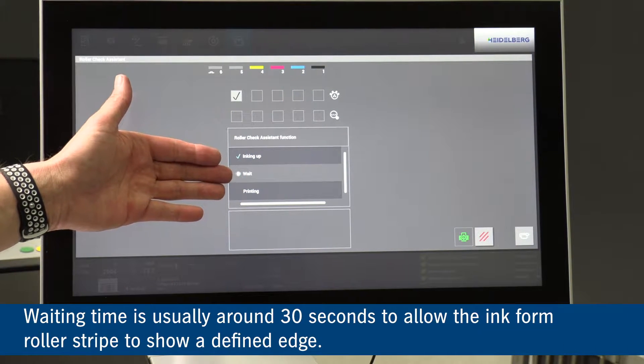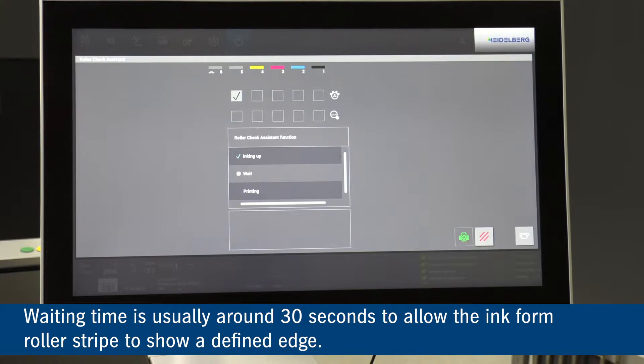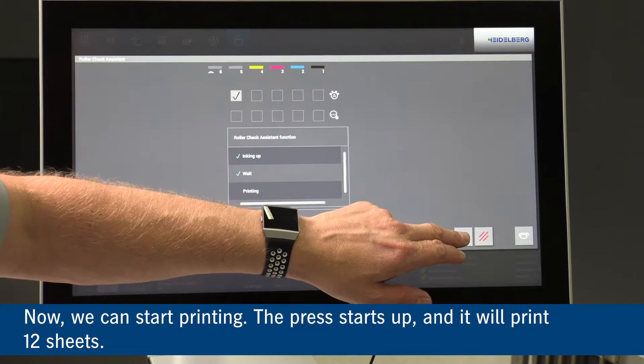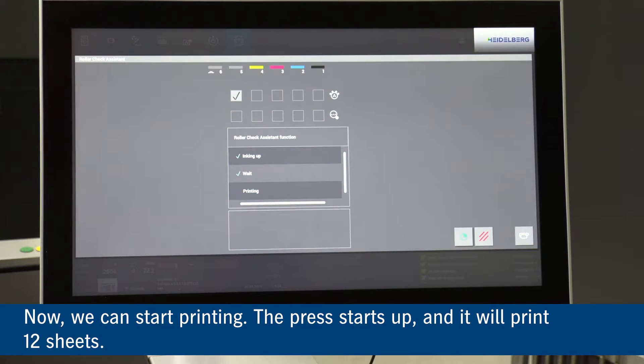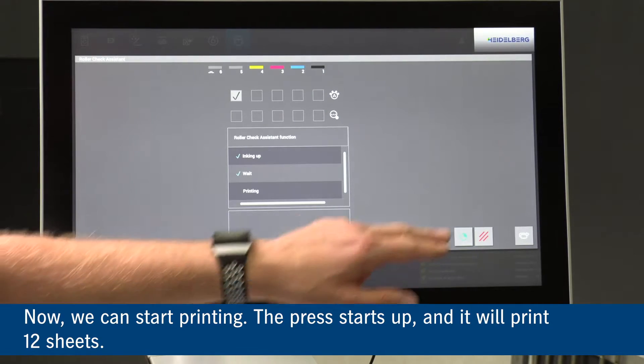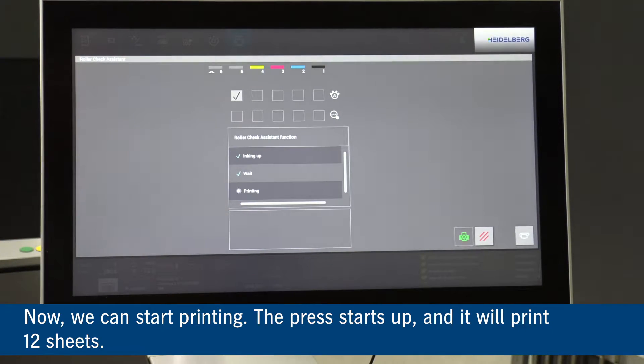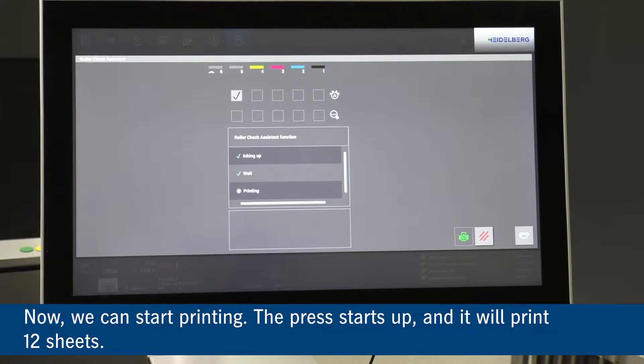As you can see we are now waiting. This is for the inkers to drop to the plate to get a decent strip. We can now go into the printing part. We start the press. The press will now go in and print 12 sheets.